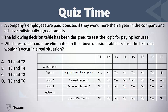Test case five: a person who is employed more than one year, he did not agree on a target, but he achieved it. This is illogical — it cannot happen in real life, because in order to achieve a target you must first agree on it. This is the first test case that will not occur in a real situation. Test case six: a person who is not employed more than one year, he did not agree on a target, but he achieved it — this is also illogical and cannot occur in real situations. So the situation that will not occur in real life is that you don't agree on a target but you achieve it.